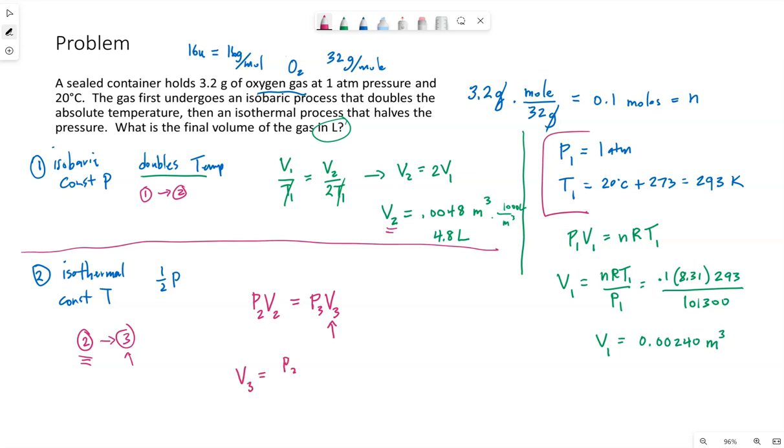V3 will be P2V2 over P3. The problem tells us that the pressure is halved, meaning if I half the original pressure, so the pressure at 0.2, if I cut that in half, that is my pressure at moment in time 3. So P2V2 over one half of P2. The final volume is going to be double what we started with.